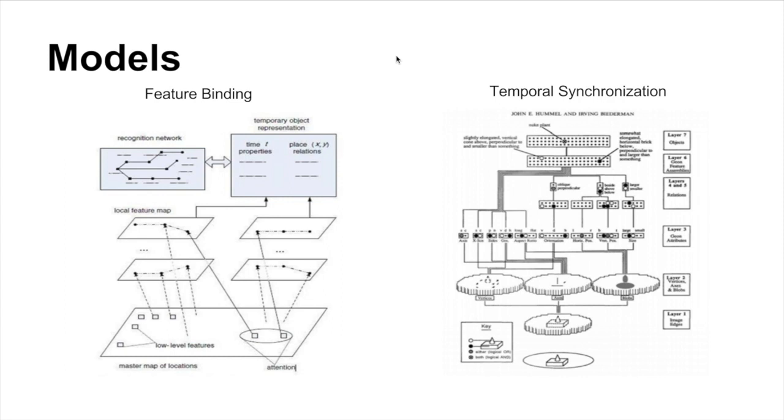Here we see two models, the feature binding model and the temporal synchronization model. We see the structure of them as rather similar in the sense that they're both top-down and bottom-up processes. Here's the low level on both and here's the top level of both. But in the feature binding, we've got a recognition network here, which is kind of like a filter of all your past memories and experiences.